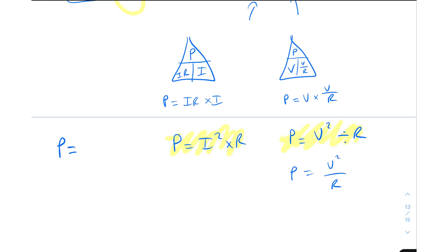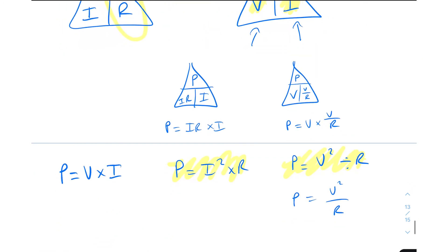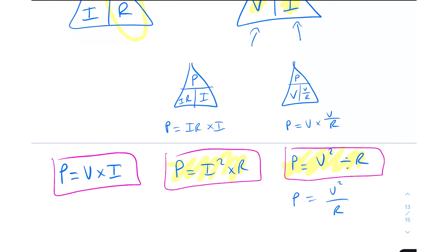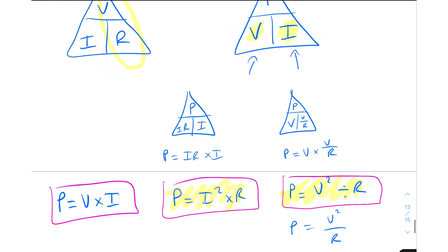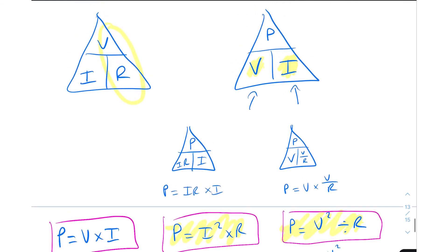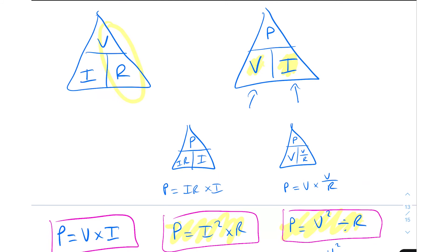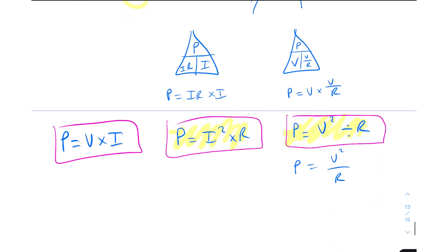So the three power equations are: P equals V times I, P equals I-squared times R, and P equals V-squared over R. These are very useful in practice - for example, if a device has a power rating of 2.4 kilowatts and runs at 240 volts, you can calculate the current as 10 amps, so you'd use a 10-amp or 13-amp fuse. These power equations are important to know.